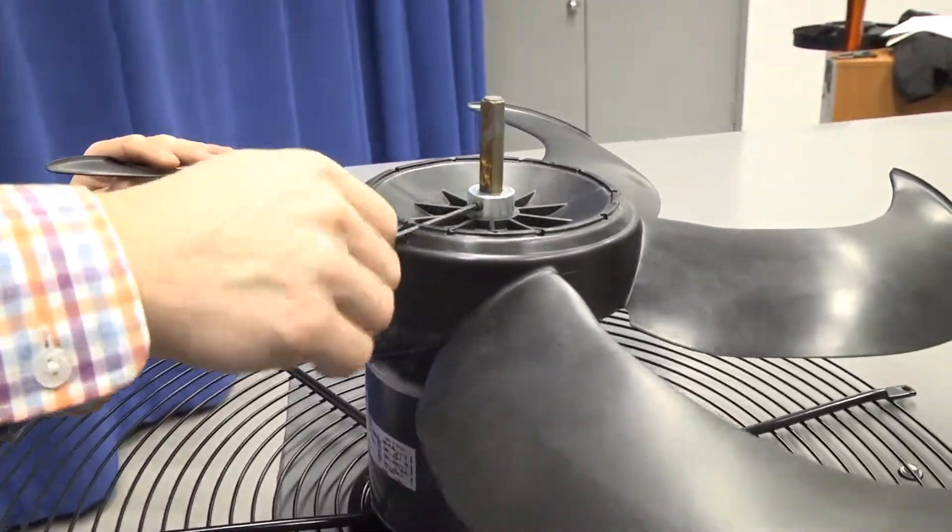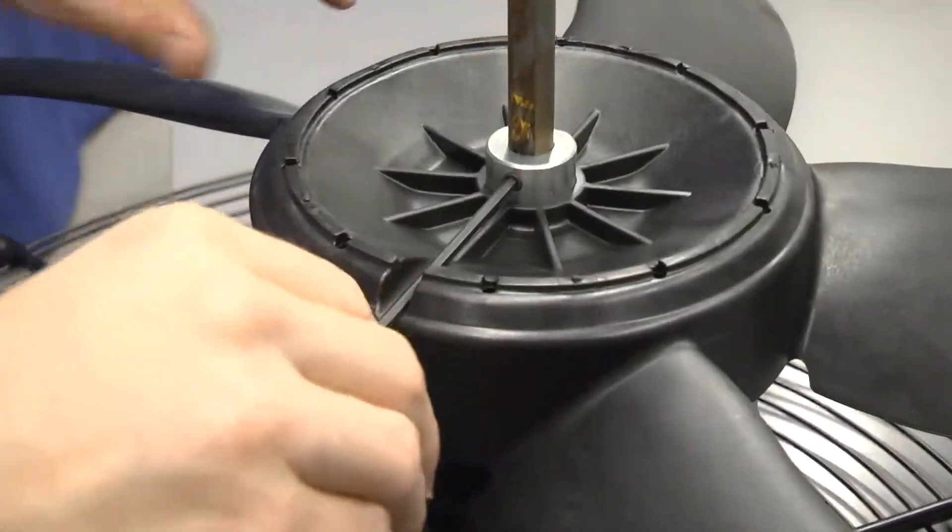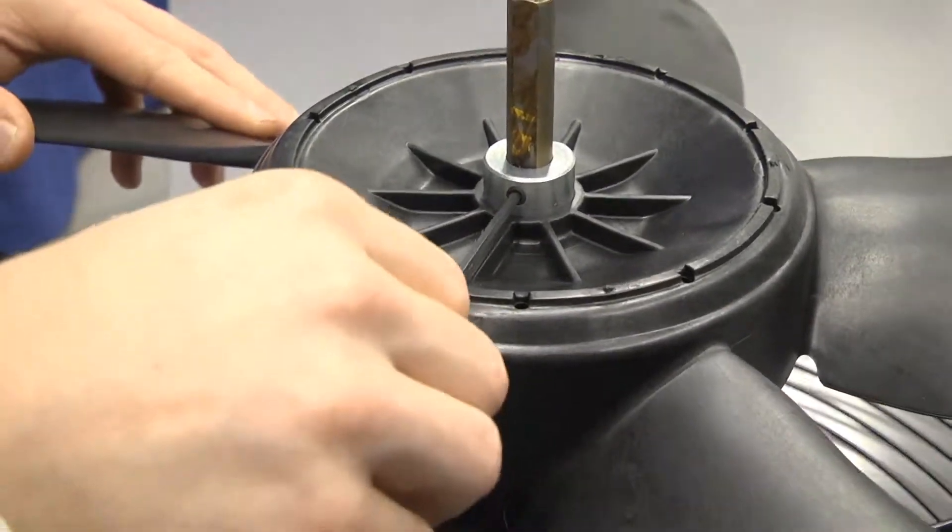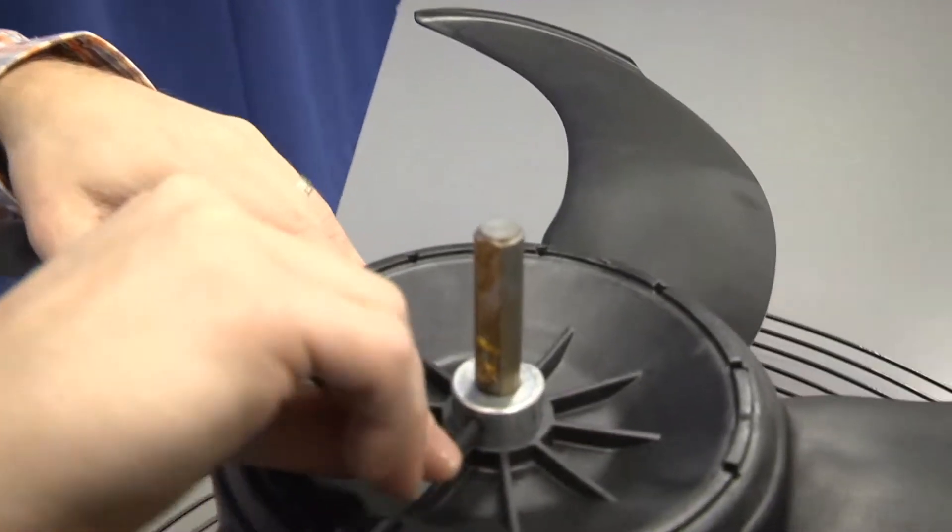Like I said, the plastic feature in the hub automatically locates the set screw onto the D so that you don't have to worry about that, and then you can torque the set screw down.